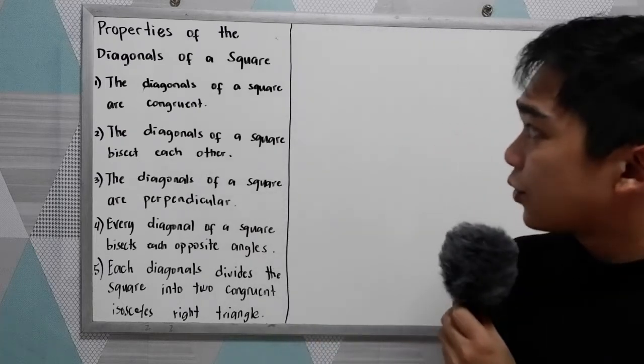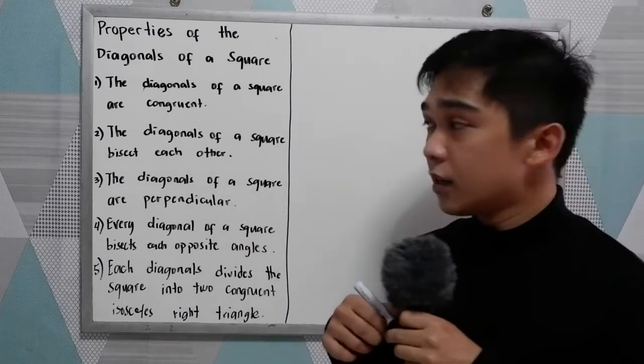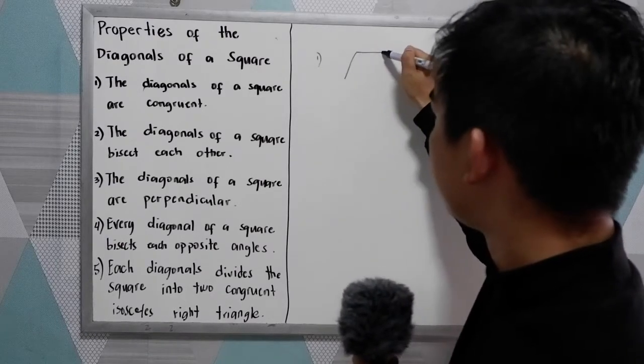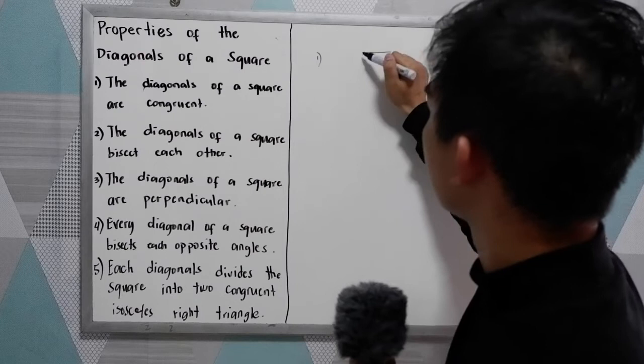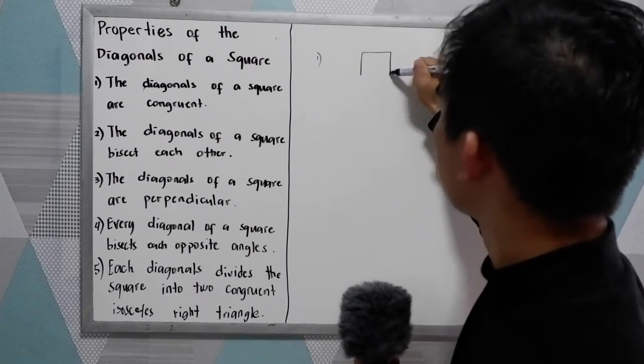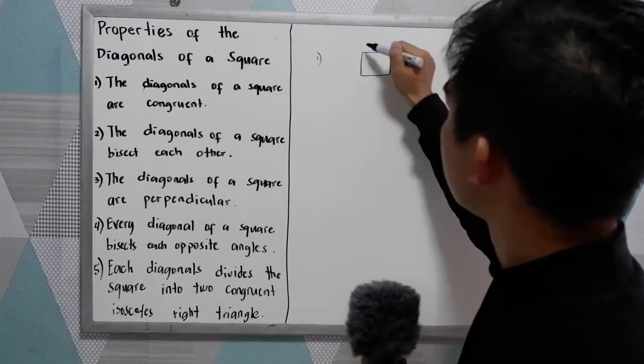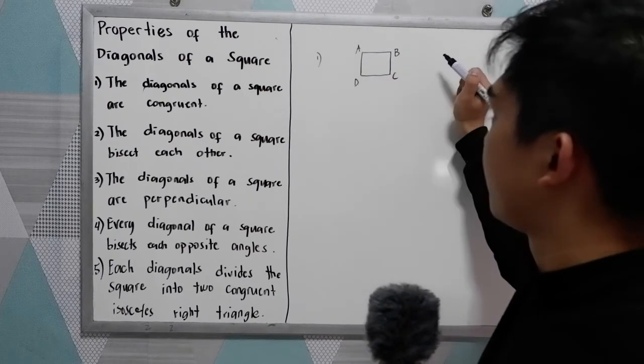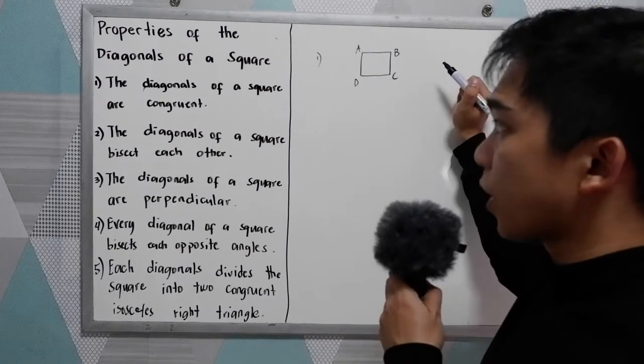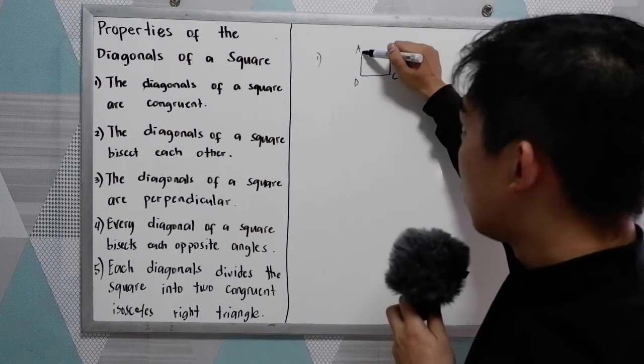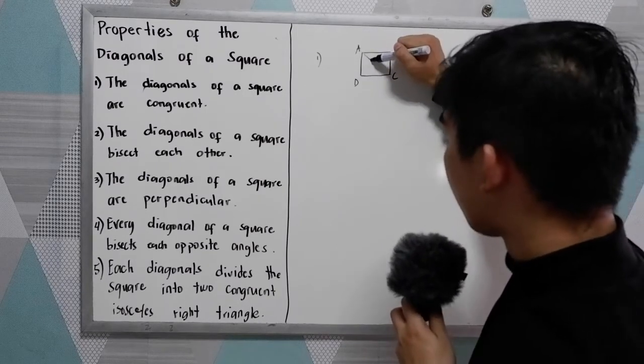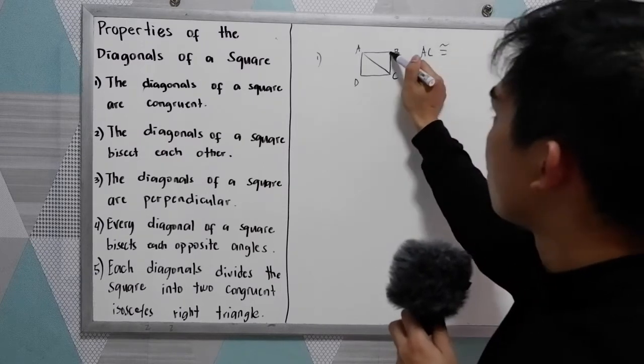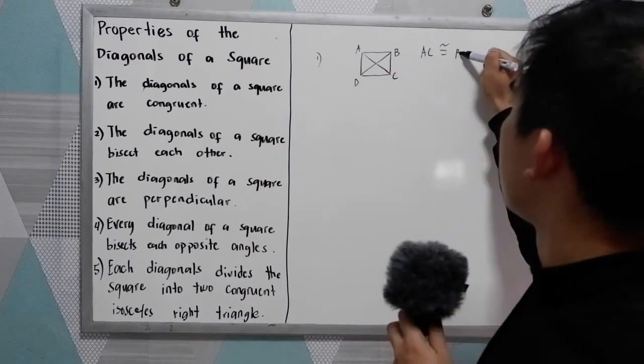First property, the diagonals of a square are congruent. Let's say we have our square, A, B, C, D. So diagonals of a square are congruent. If I'm going to draw AC, that is congruent to BD.